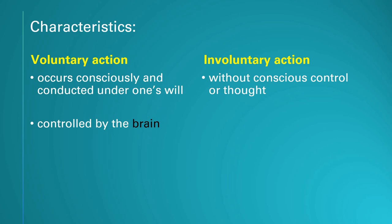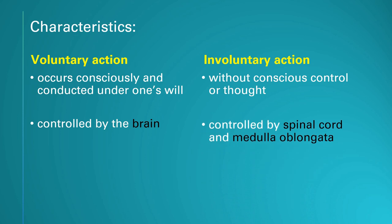Voluntary action is controlled by the brain — your brain is the center of control for the actions you choose to do. For involuntary action, it is controlled by the spinal cord and the medulla oblongata. There are two centers because there are actually two types of involuntary action, which we will look at shortly.